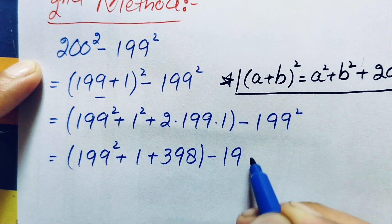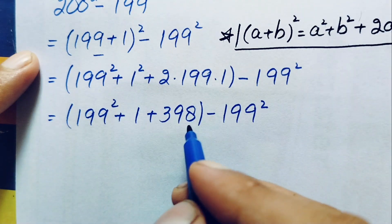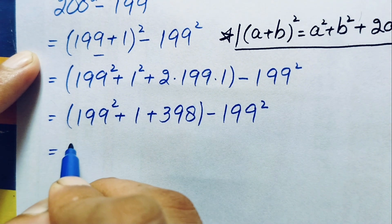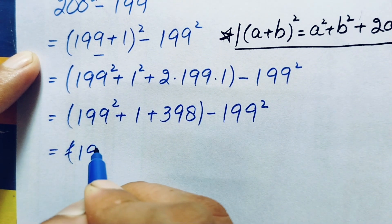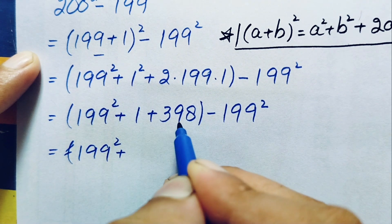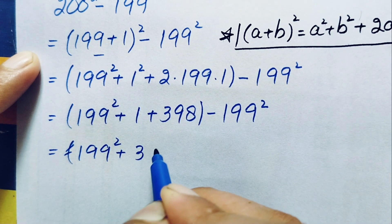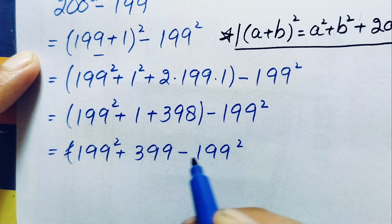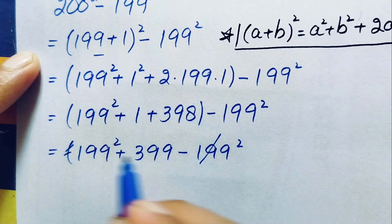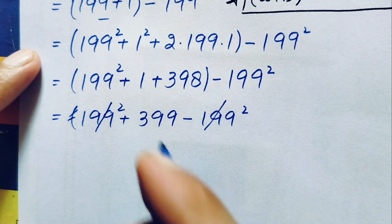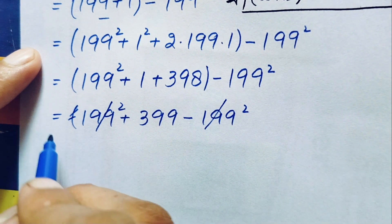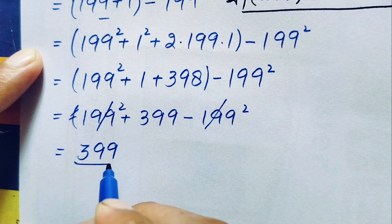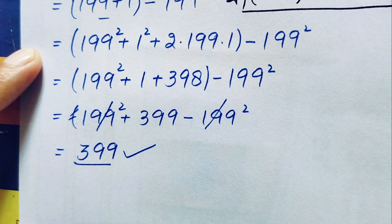This becomes 199 squared plus 399, minus 199 squared. Removing the parenthesis, the positive 199 squared and the negative 199 squared cancel each other, leaving only 399. So our answer using the second method is 399.